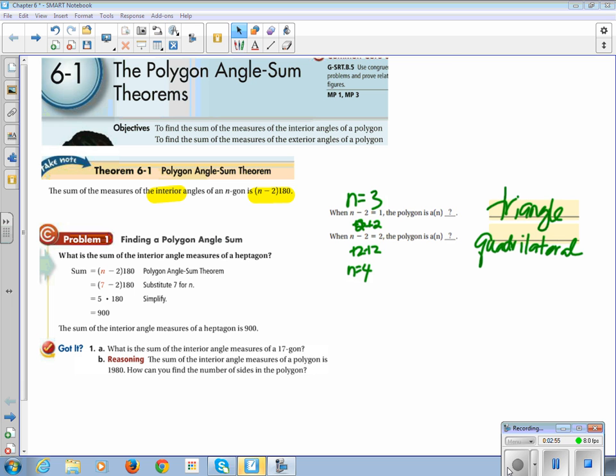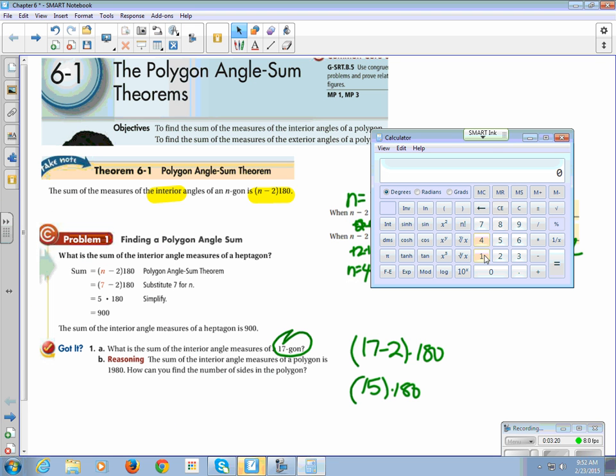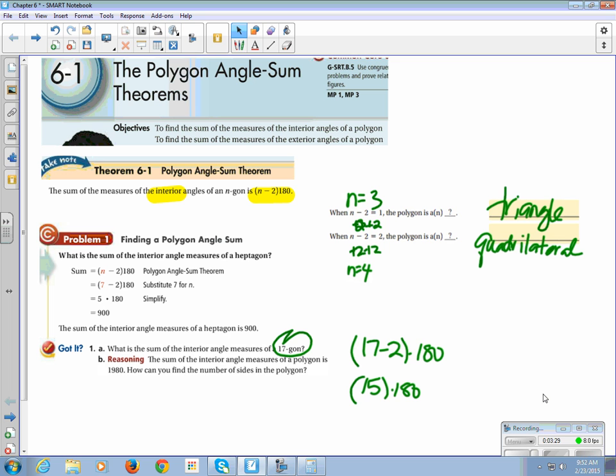We're going to do that, but with a 17-gon. What is the sum of the interior angle? So we're going to take 17 minus 2 times it by 180. 17 minus 2 is 15 times 180. Because it is morning time, and my mental math is not amazing in the morning. 15 times 180 is 2,700. So if I had a 17-sided figure, and I want to add up all the interior angles, it would equal 2,700.